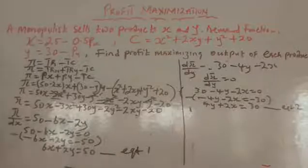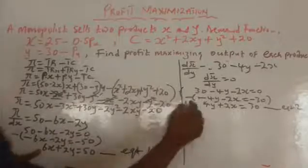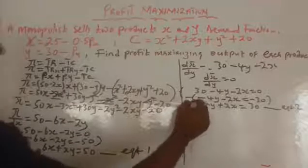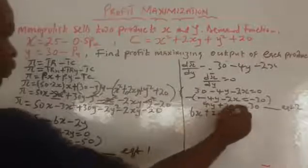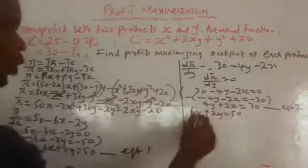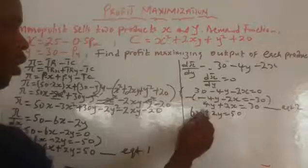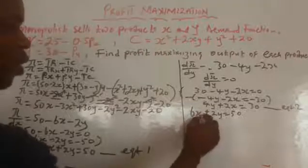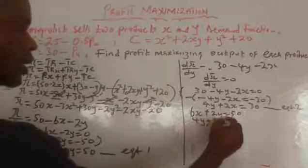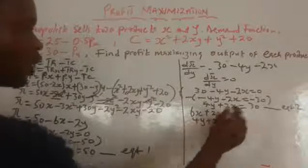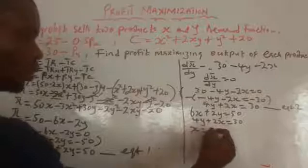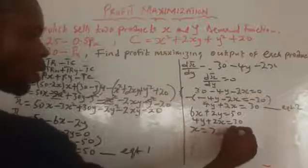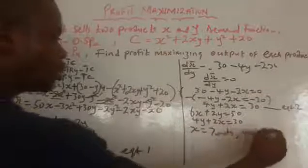Now we solve the simultaneous equations. Equation 1 is 6X plus 2Y equals 50, and Equation 2 is 2X plus 4Y equals 30. Solving these simultaneously gives X equals 7 units and Y equals 4 units.